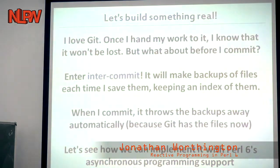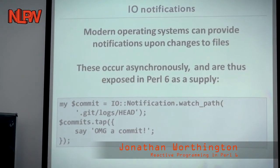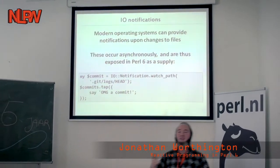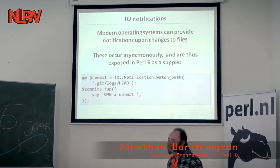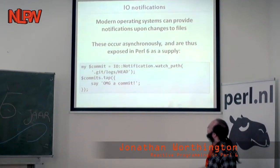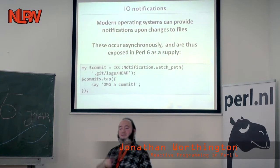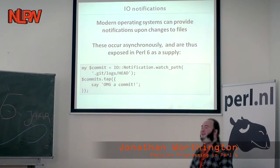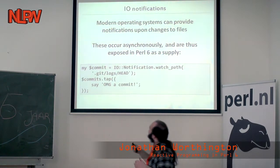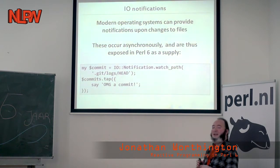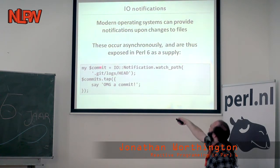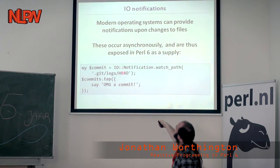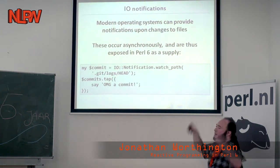How did we build it? All modern operating systems provide IO notifications - they tell us when something changed, and this isn't a synchronous source of data. We expose this in Perl 6 as an IO::Notification class. You can say what path to watch: give it a file and it tells you when that file changes; give it a directory and it tells you about files in that directory that change. To detect commits: whenever HEAD moves, the ref log is updated, which is in .git/logs/HEAD. So we tap the file system notifications for that file and just say 'a commit' - every time a git commit happens it comes and logs a message.